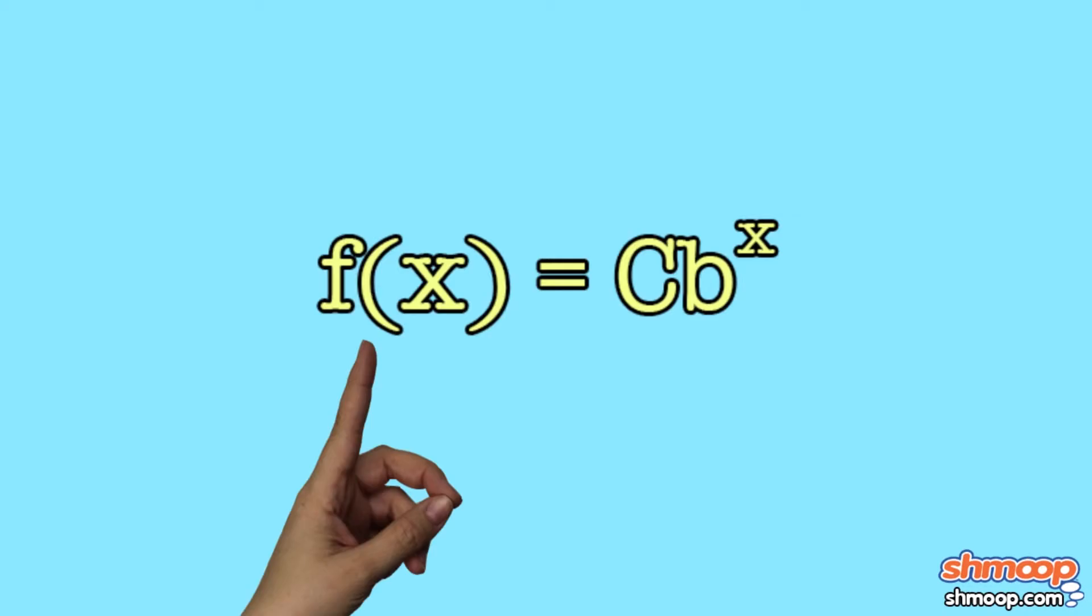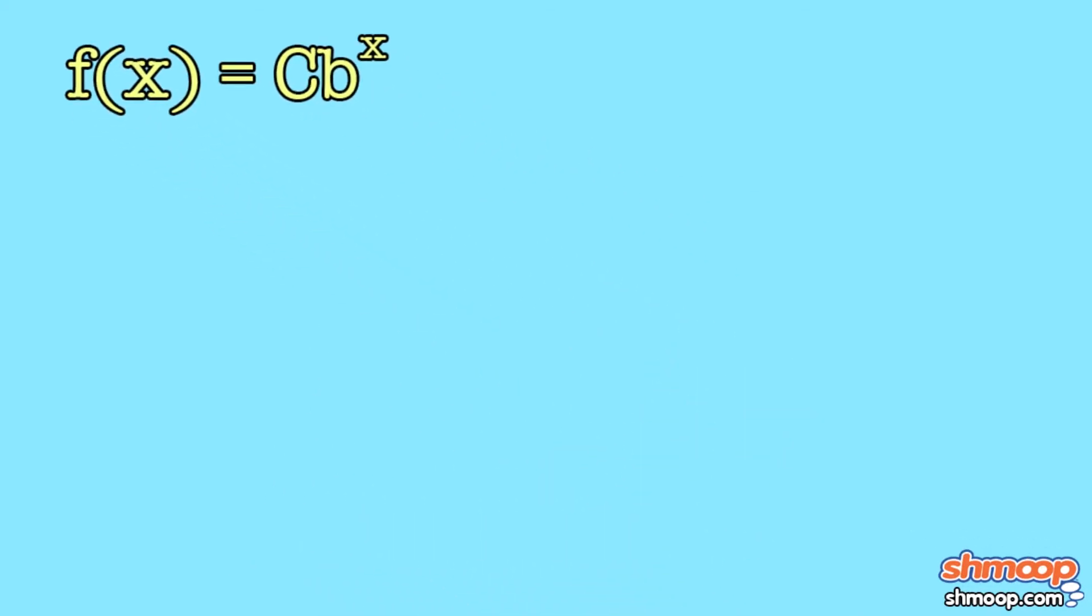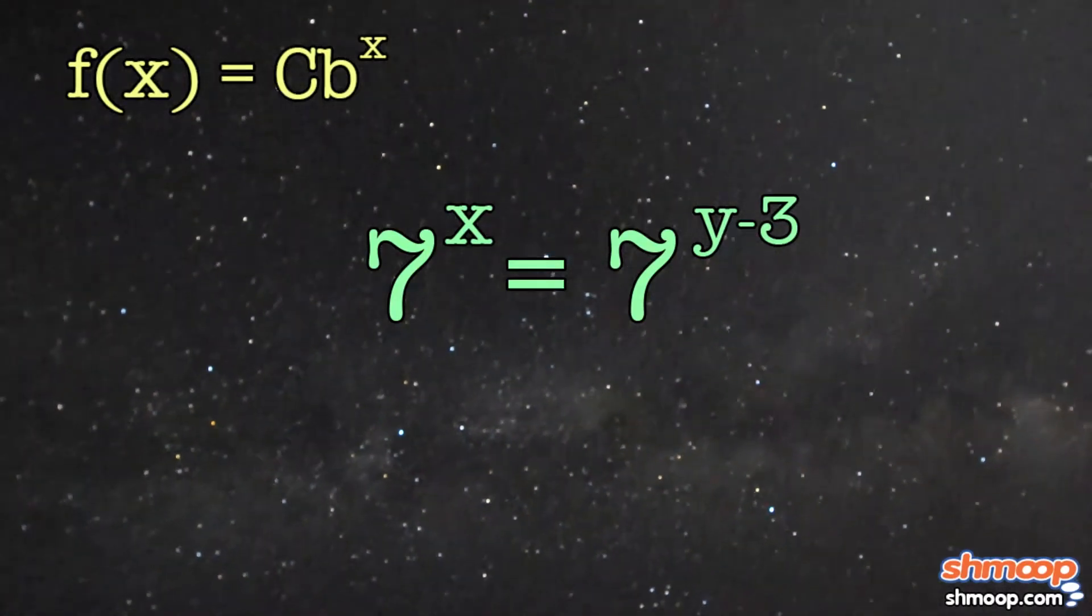Now that we know what these equations look like, and what their exponents do to them, we're ready to start solving. So, if we've got an exponential equation like 7 to the x power equals 7 to the y minus 3 power, then we can thank our lucky stars, because this one's a snap.